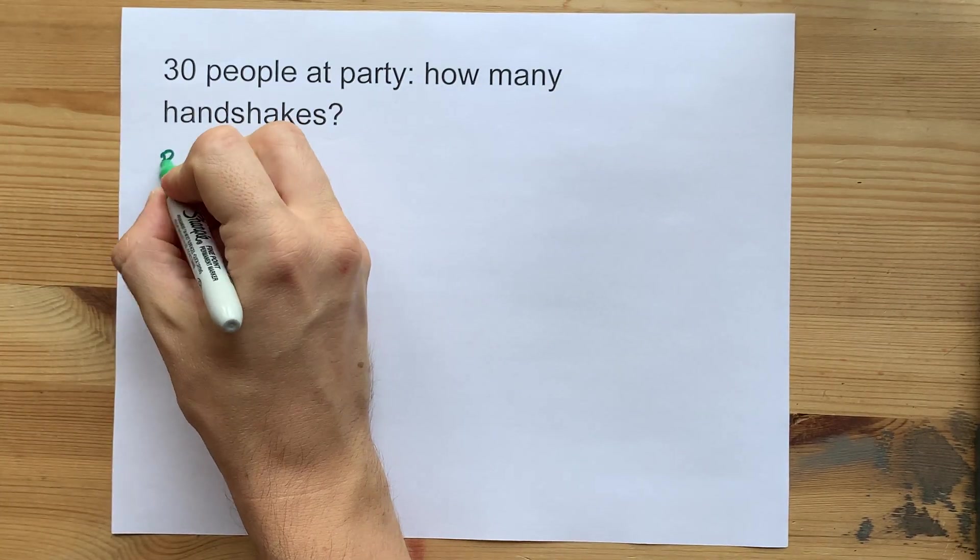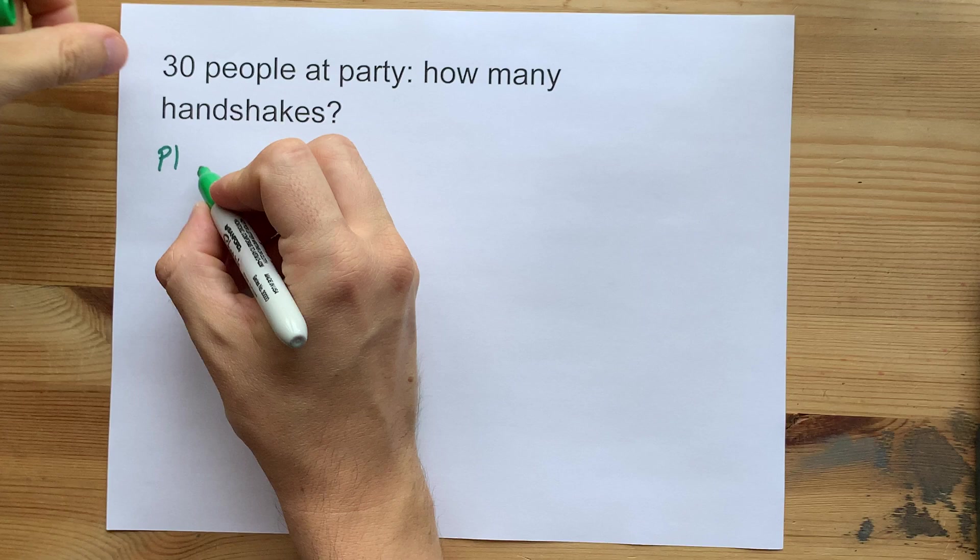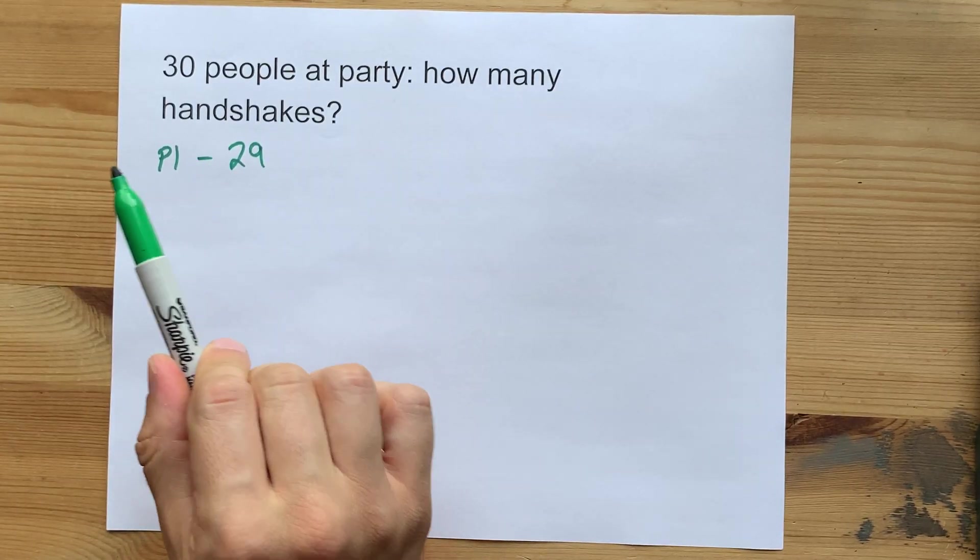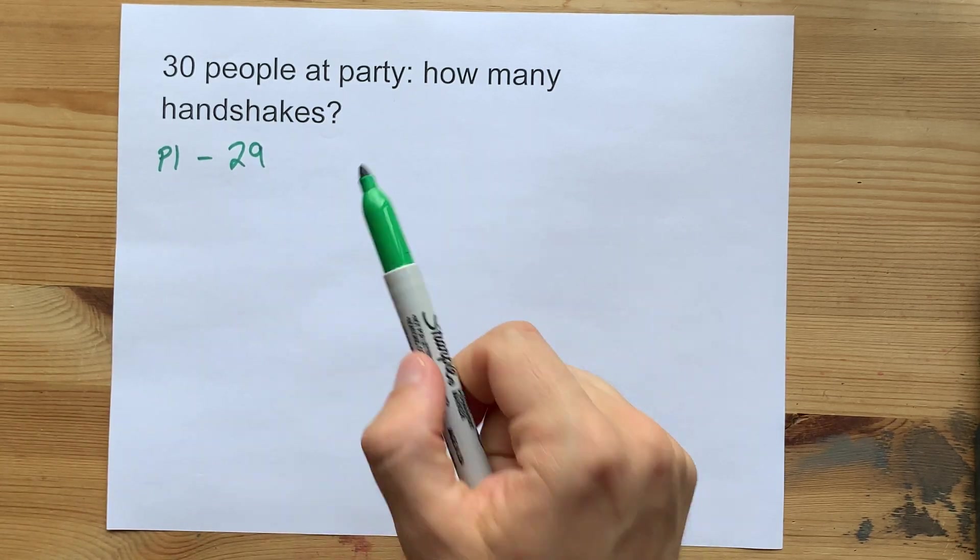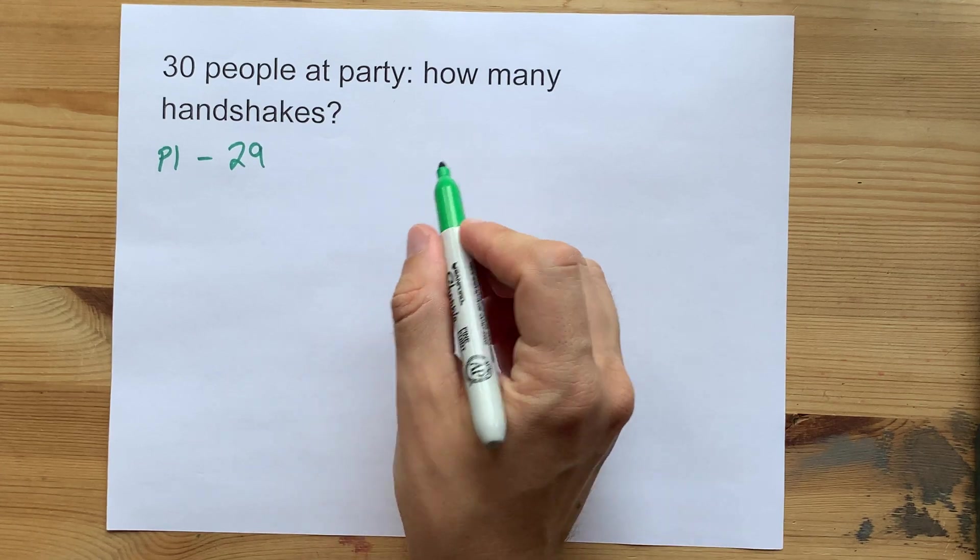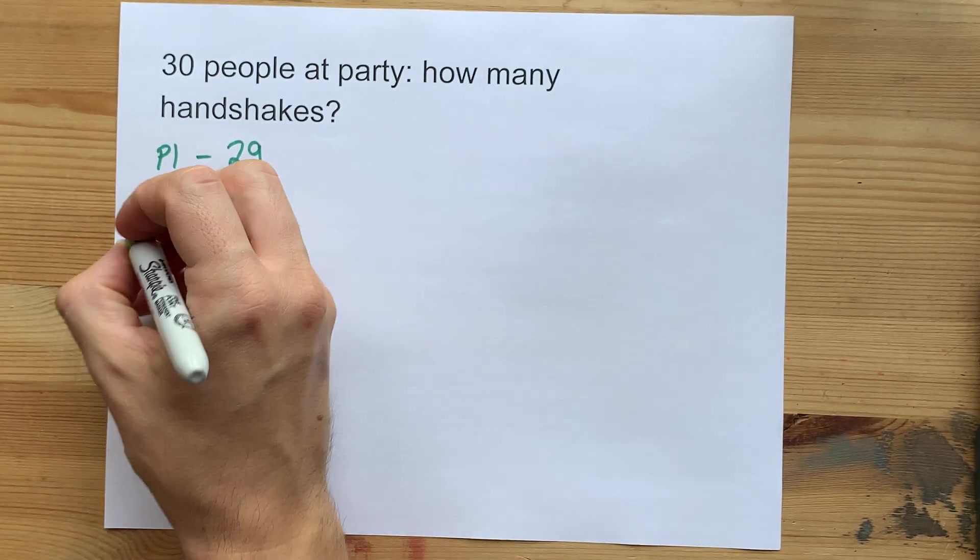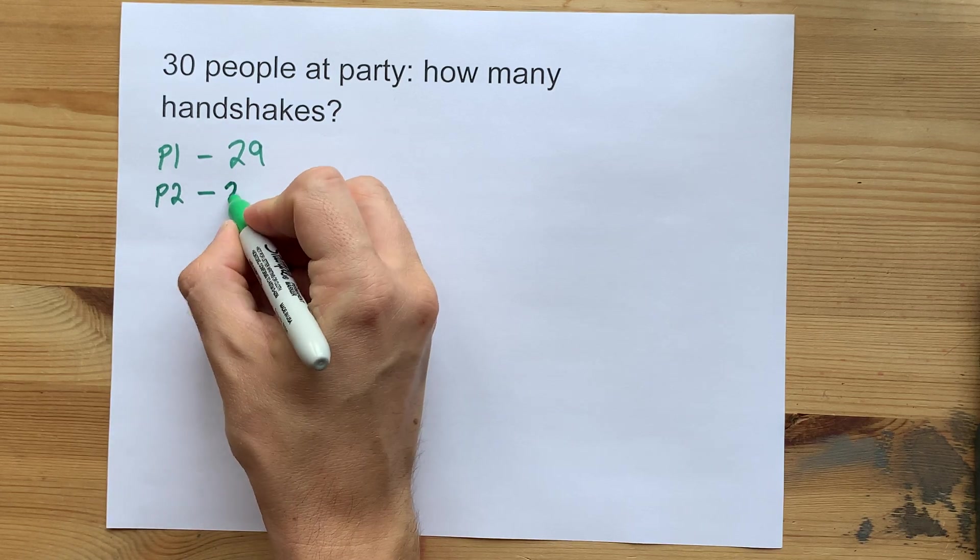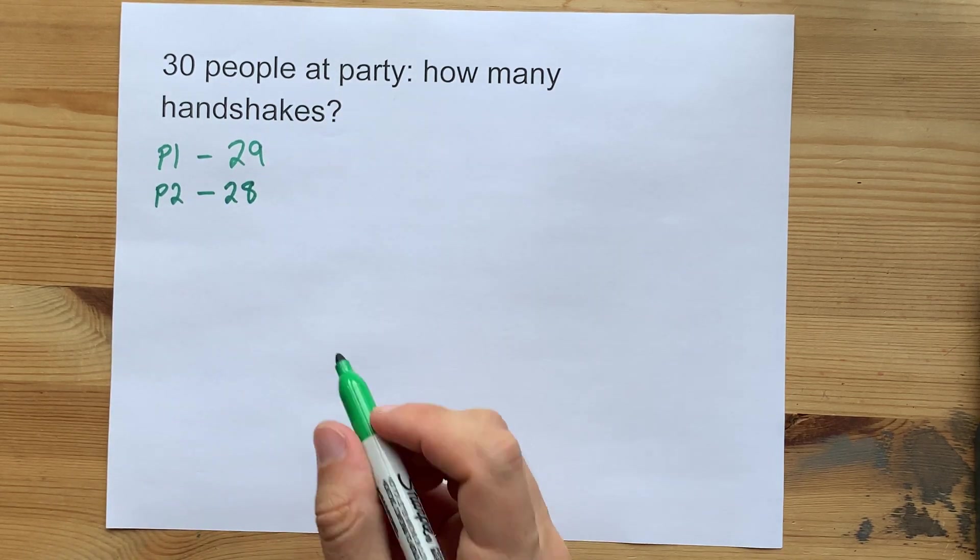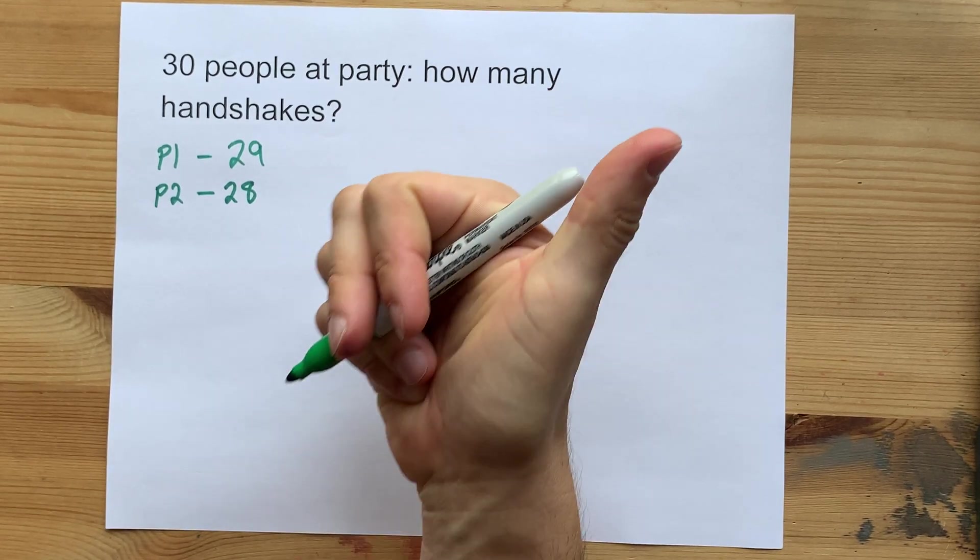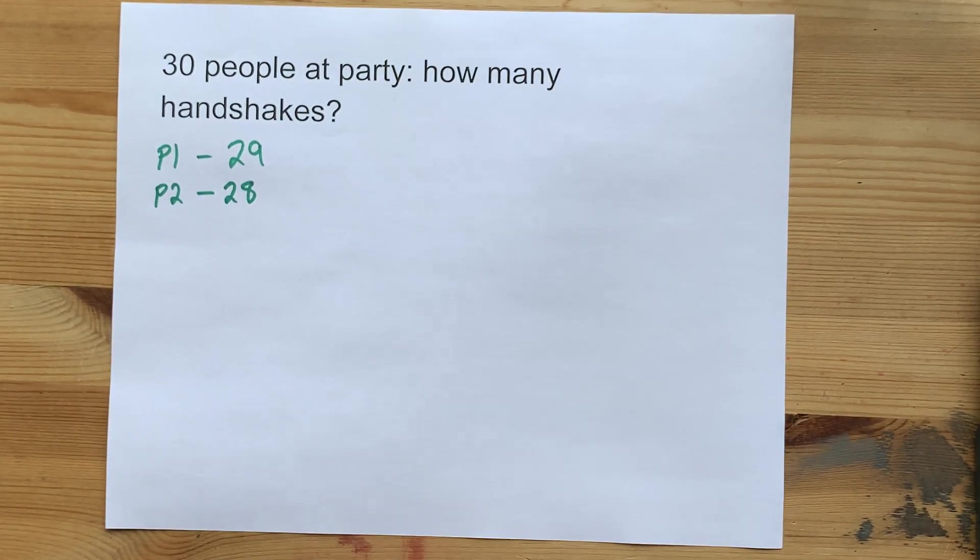So person one is going to have 29 handshakes because he or she or they are going to shake hands with everyone else, not including themselves. But then at that point, the next person, person two, only needs 28 more unique handshakes because they don't shake hands with themselves, and we've already counted the handshake that they made with P1.